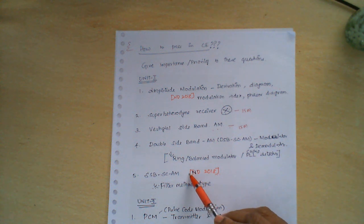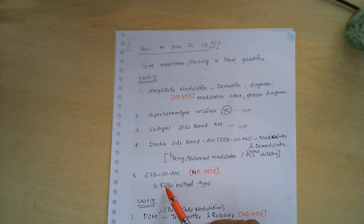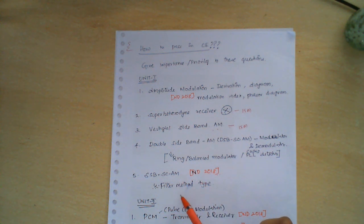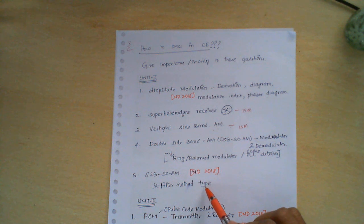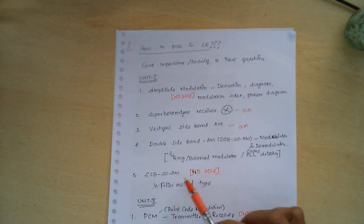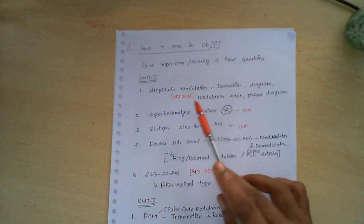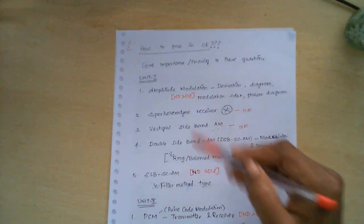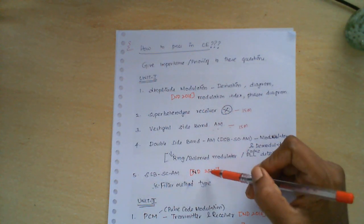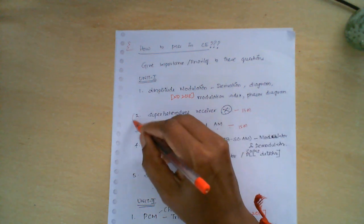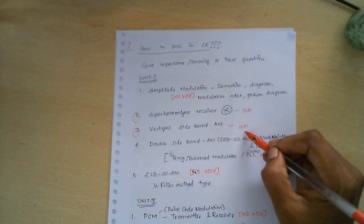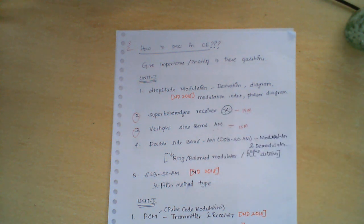The fifth question is SSB — single sideband suppressed carrier AM. If they do not specify the method, you can write any of the two methods: the frequency discrimination method or the phase discrimination method. This comes under the frequency discrimination method, that is the filter method type. This question was particularly asked in November–December 2018. The amplitude modulation question and the SSB question highlighted in red were asked for 13 marks, whereas the second and third were asked under 15 marks.